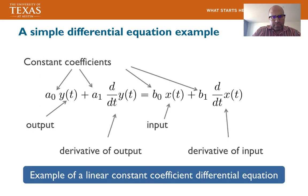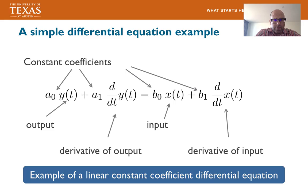As a simple example of a linear constant coefficient differential equation, consider an equation in terms of x of t, which is the input, and y of t, which is the output. The equation has both the input, output, and their derivatives in it, making it a differential equation. It's called linear constant coefficient because the coefficients multiplying the outputs, derivatives, inputs, and input derivatives are all constant.